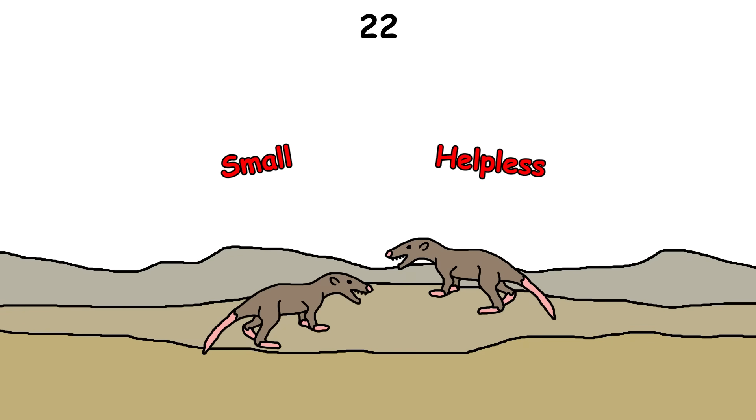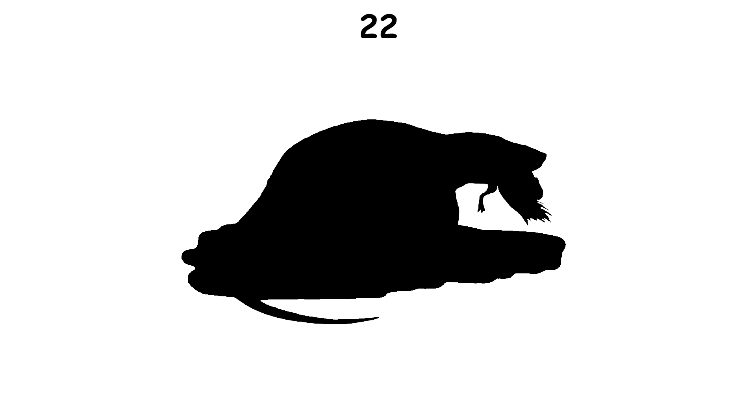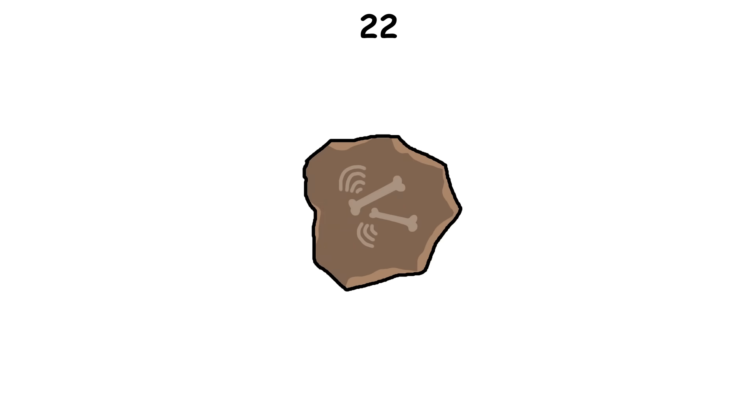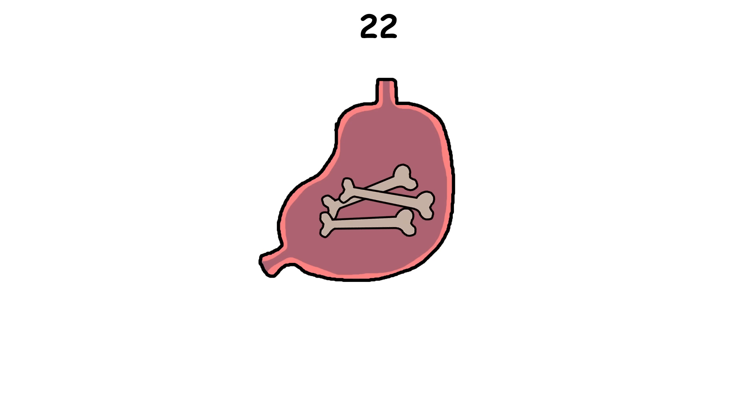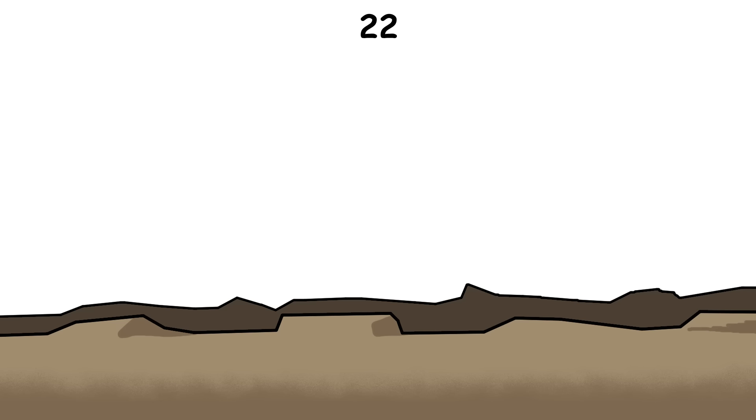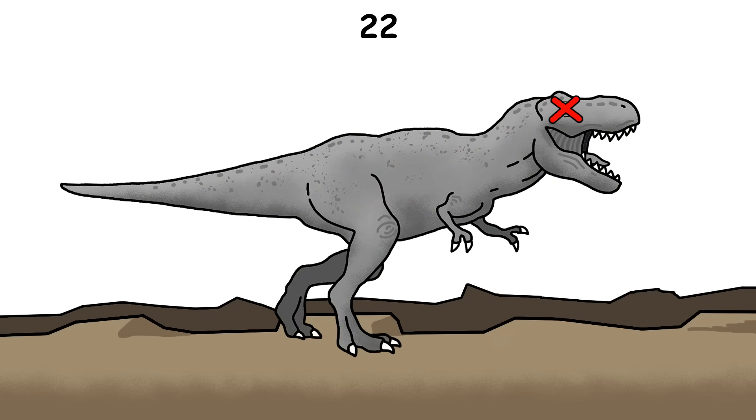It's often said that mammals were small and helpless while dinosaurs ruled the earth, but while most mammals were small, some were capable predators. One example is Repenomamus, a badger-sized mammal. Fossils have been found with the bones of baby dinosaurs, specifically of Psittacosaurus, inside its stomach. Another fossil shows Repenomamus mid-attack, gripping a dinosaur by the ribs. This shows that some mammals were already eating dinosaurs long before dinosaurs went extinct.